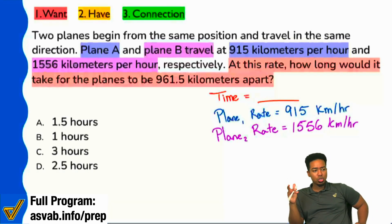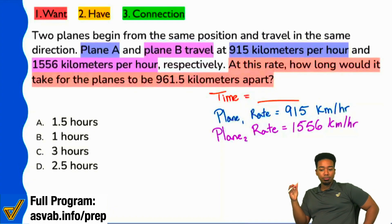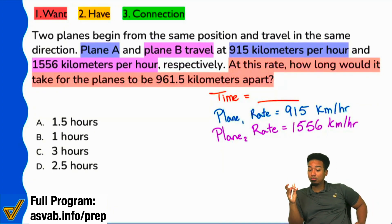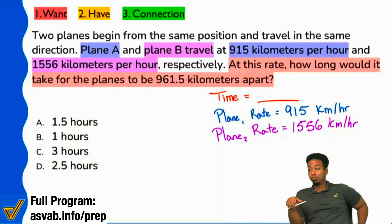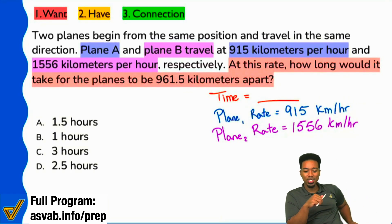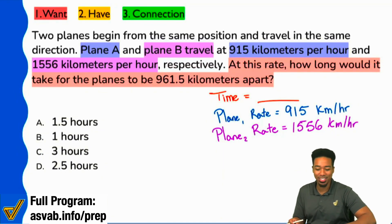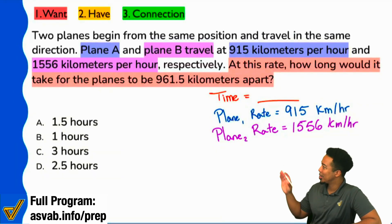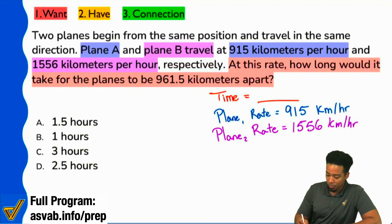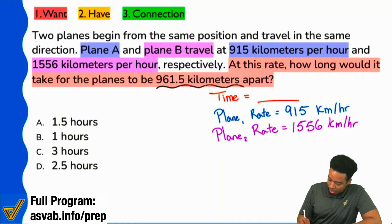So does anybody know what we should be doing with these two rates? Some people are saying add the rates, subtract the rates. We could add them, we could multiply them. Is that going to get us the correct answer, though? Chris says put them together; Delilah says subtract; Jennifer says add. So let's understand where we're going from here, because we have one more piece of information: 'How long would it take for the planes to be 961.5 kilometers apart?'